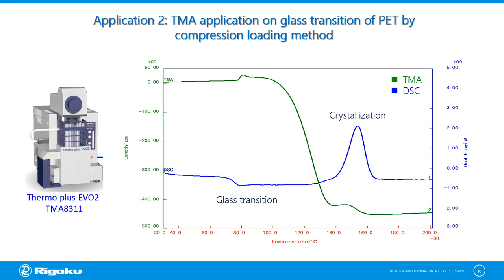Comparing the DSC measurement result and the TMA measurement result of PET material, the expansion curve at 80 degrees centigrade is due to glass transition. After glass transition, the sample presents a shrinkage curve up to 130 degrees centigrade due to softening, while the DSC curve shows an exothermic peak at 130 degrees centigrade due to crystallization. From these results, we can deduce that the sample hardens due to crystallization at 130 degrees centigrade, and the TMA result suggests the sample slightly expanded during the crystallization process, then shrinks along with the completion of crystallization.